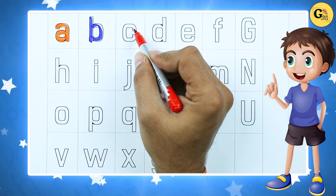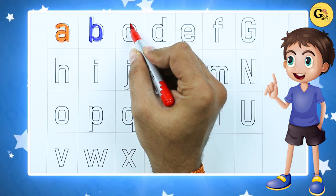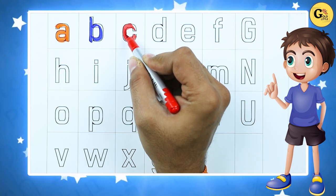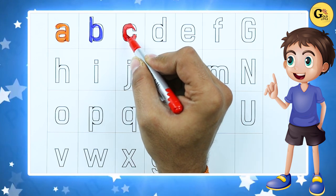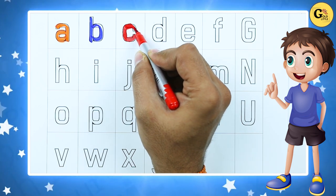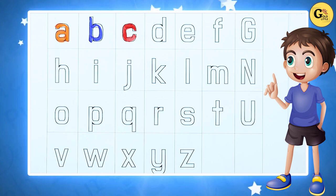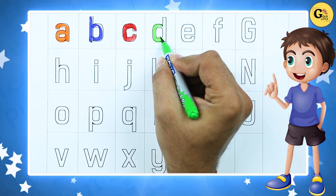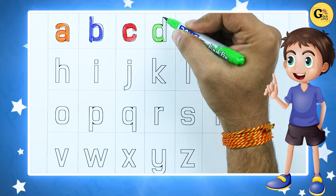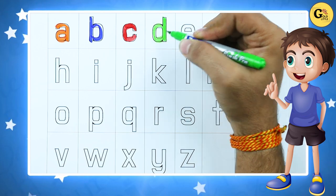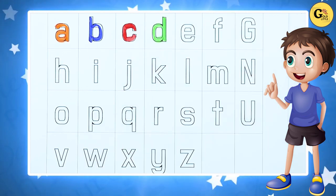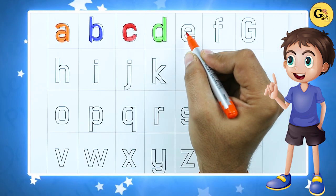C for cat. It's small c — C for cat. D — D for dog. It's a D, D for dog.